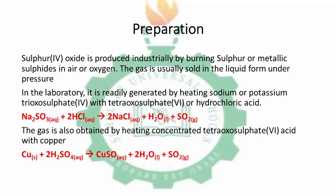In the laboratory, it is rarely generated by heating sulfite with dilute sulfuric acid or hydrochloric acid. Here is the equation: sulfite reacting with HCl, that's hydrochloric acid, to produce SO2 gas. The gas can also be obtained by heating concentrated sulfuric acid with copper. This is a redox reaction, in which copper reacts with concentrated sulfuric acid to produce CuSO4 plus 2H2O plus SO2.